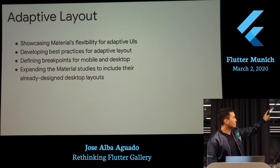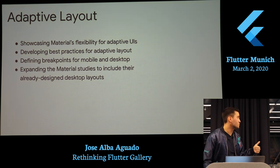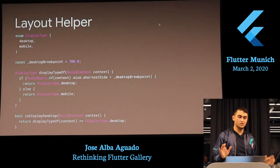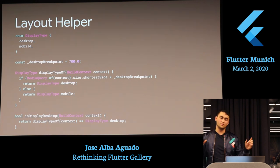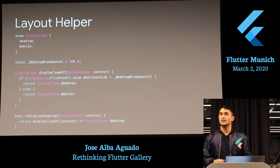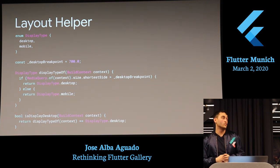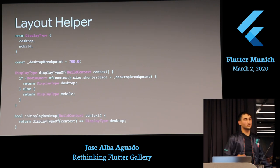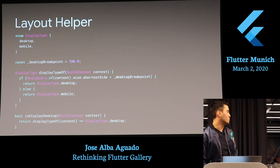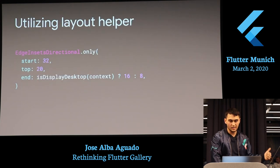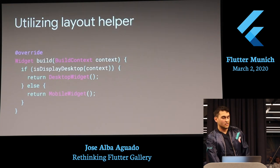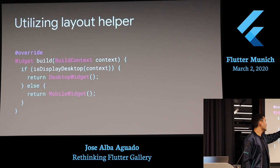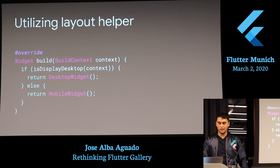For best practices in adaptive layout, there are breaking points. What we did was create a distinction between desktop and mobile — we took the media query on the shortest side and made sure it was bigger than a certain breakpoint. For us that breakpoint was 700. So if the shortest side was bigger than 700, it would use desktop layout; otherwise it would use mobile layout. That's how we organized our application.